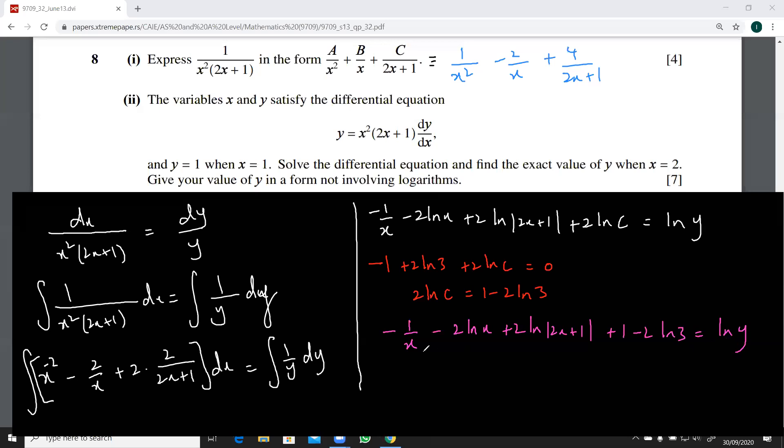Now, can I write this as minus 1 over x ln e? Minus 1 over x ln e minus ln x squared plus ln 2x plus 1 squared plus ln e minus ln 9. And that is equal to ln y.